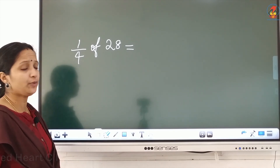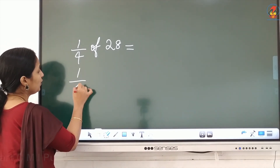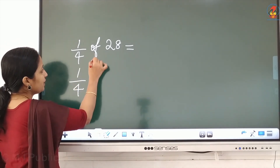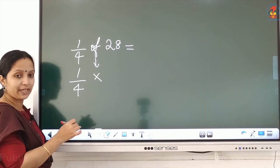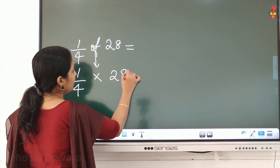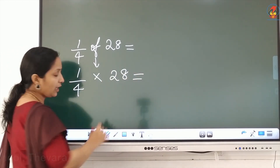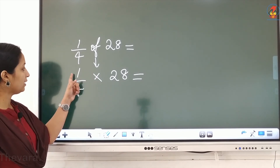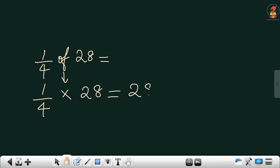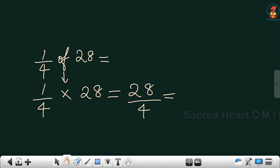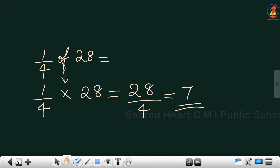Next question: 1 by 4 of 28. 'Of' means multiplication, so 1 by 4 of 28 becomes: multiply the numerator — 1 into 28 equals 28. Write the same denominator 4. The answer is 28 divided by 4, which equals 7.